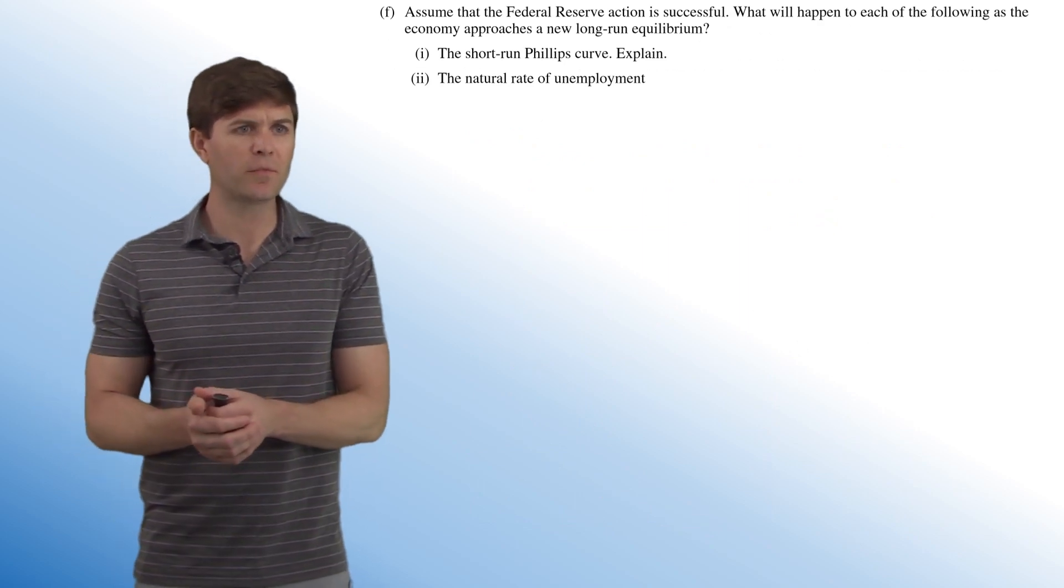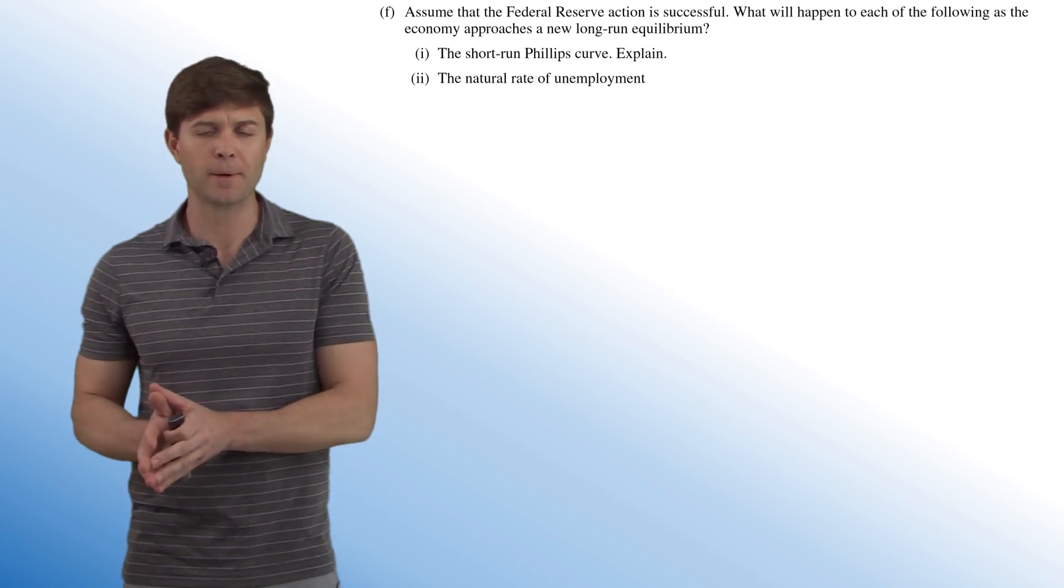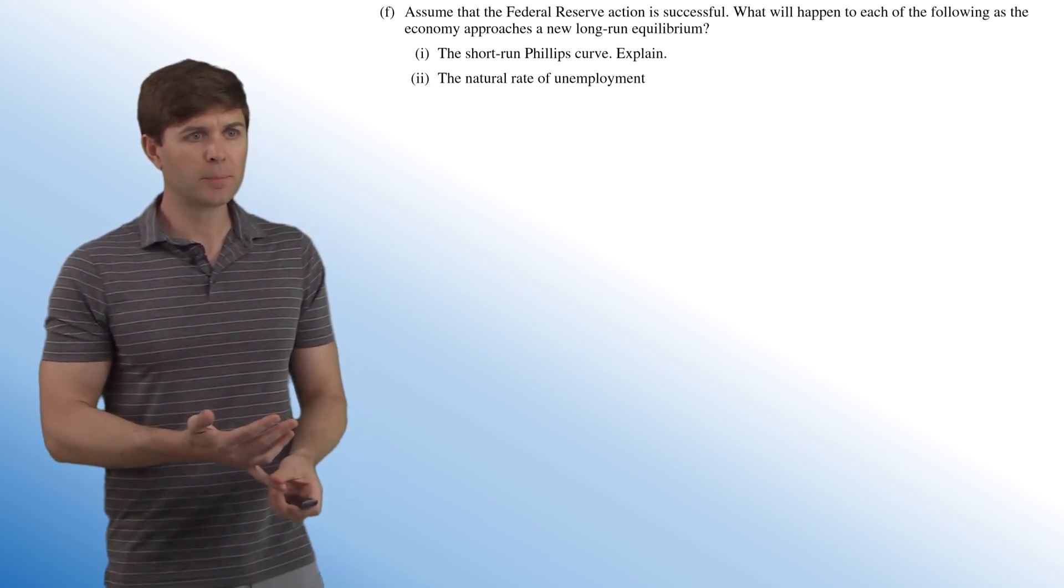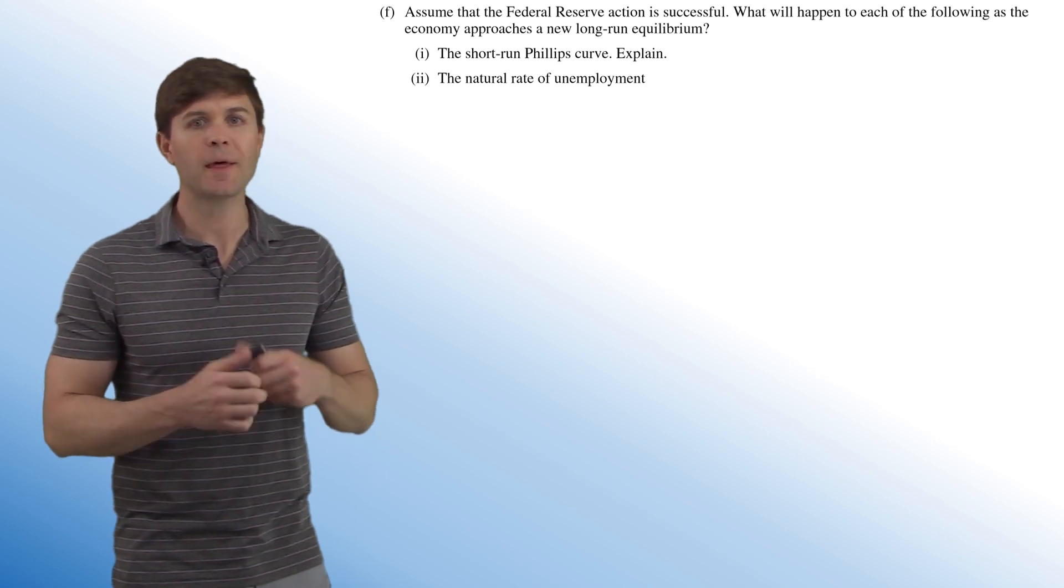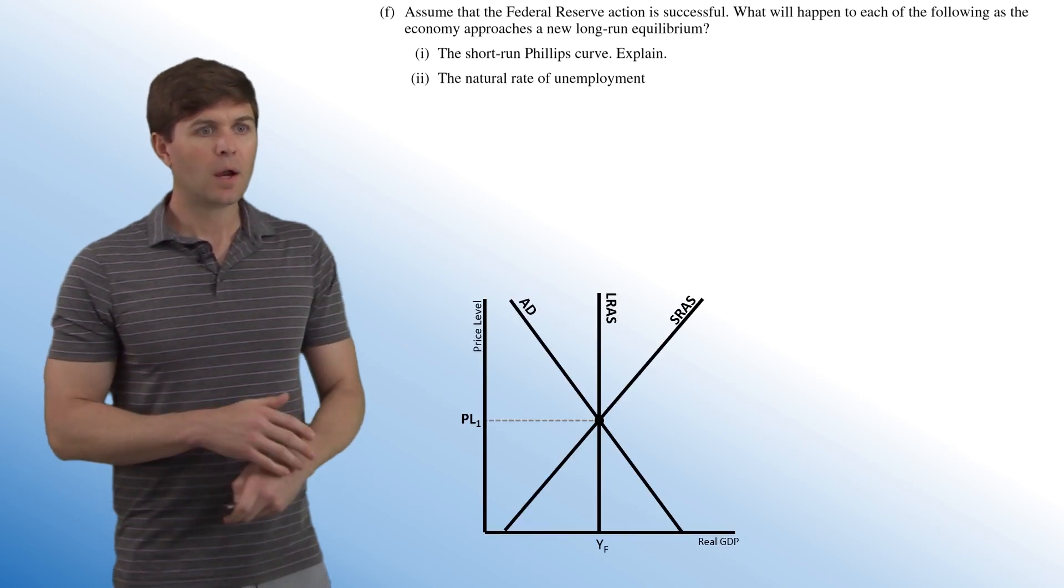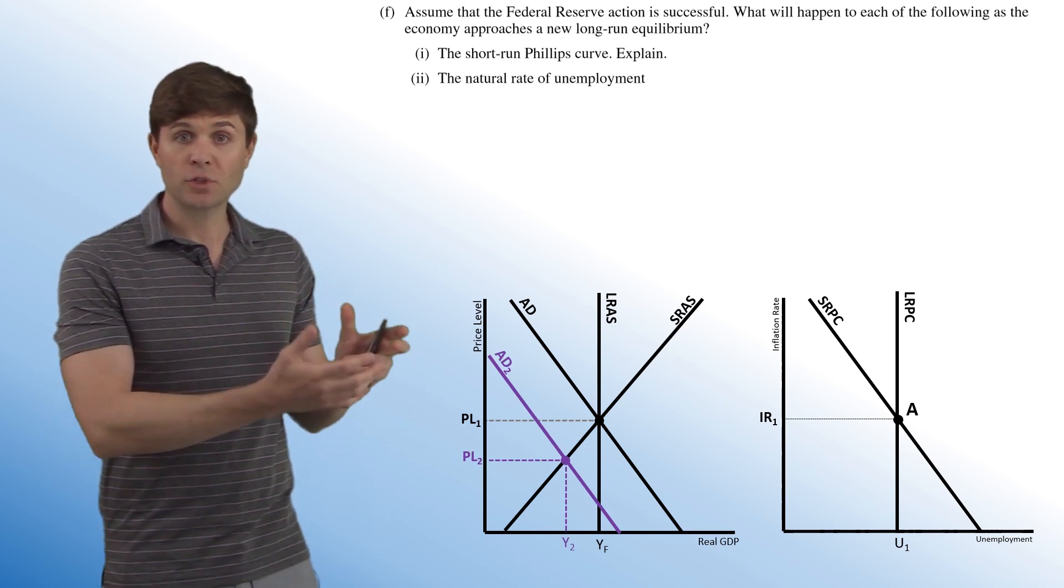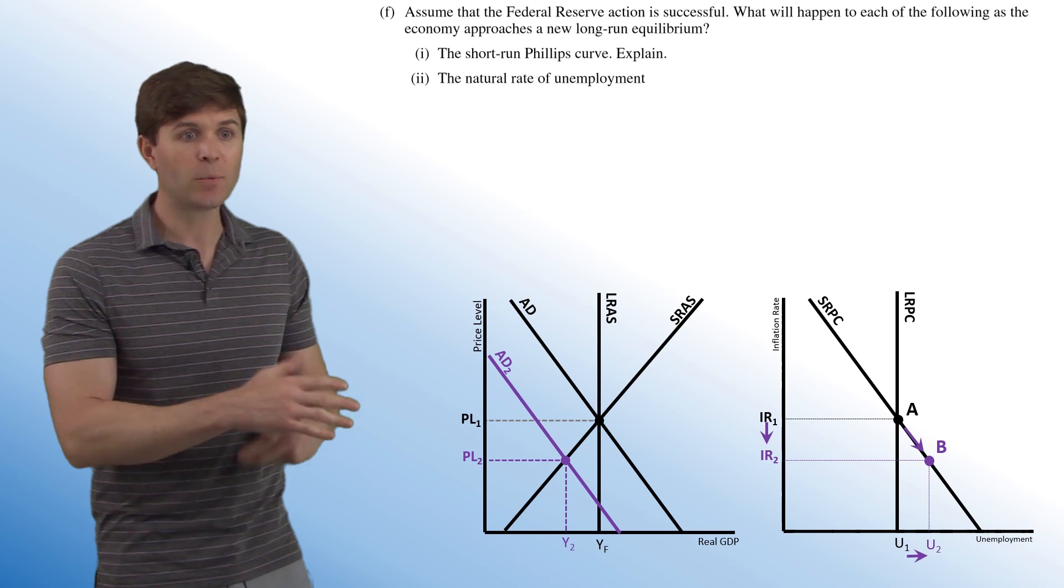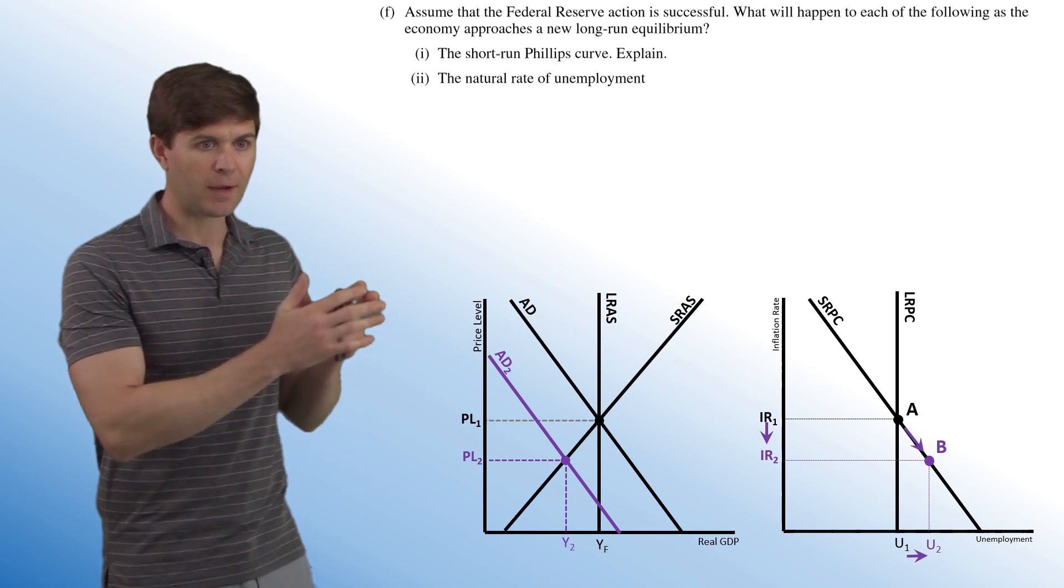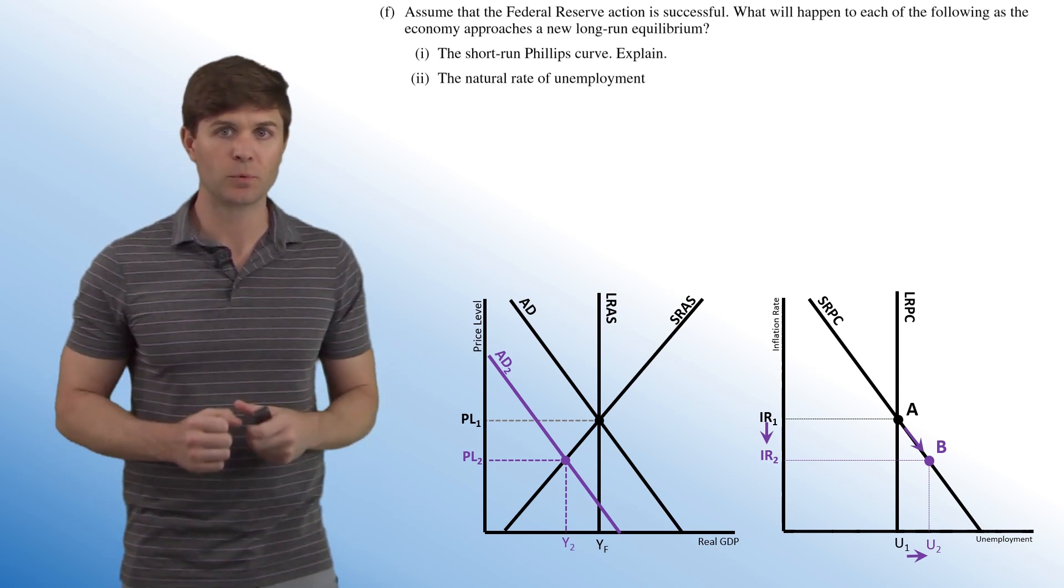Part F. Assume that the Federal Reserve action is successful. What will happen to each of the following as the economy approaches a new long run equilibrium? This is the toughest part of this question here. So we want to know what's going to happen to the short run Phillips curve as we approach long run equilibrium, that auto adjustment that takes place, and explain it. And then what's going to happen to the natural rate of unemployment? So here we are in equilibrium. And earlier we decided that aggregate demand is going to shift to the left, bringing price level down. And that would cause our point A to shift down to point B.